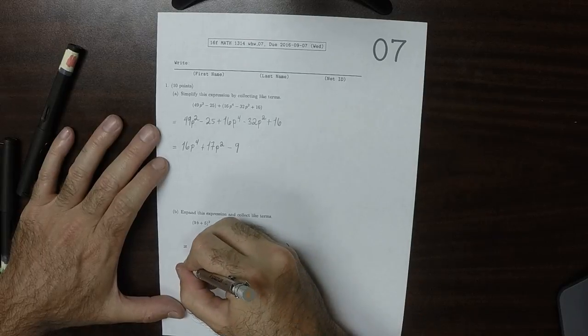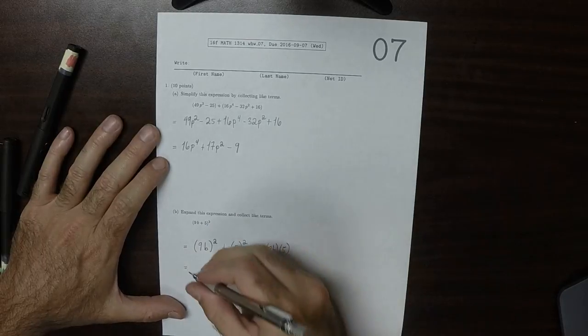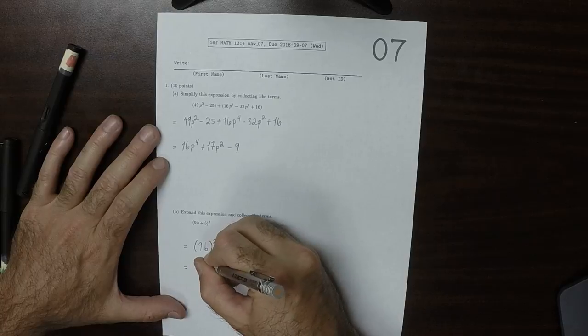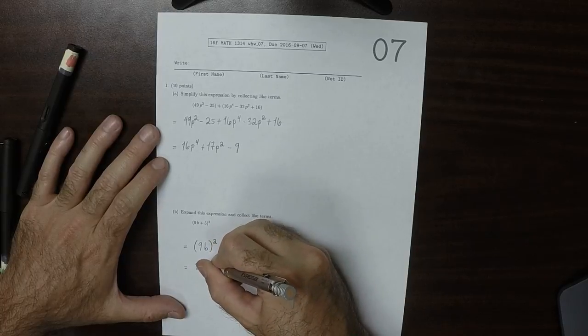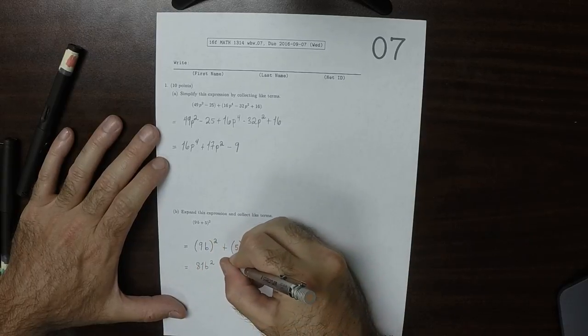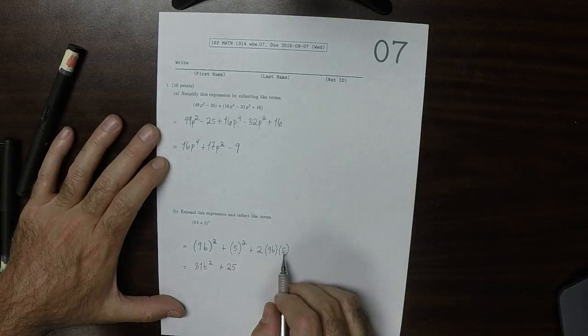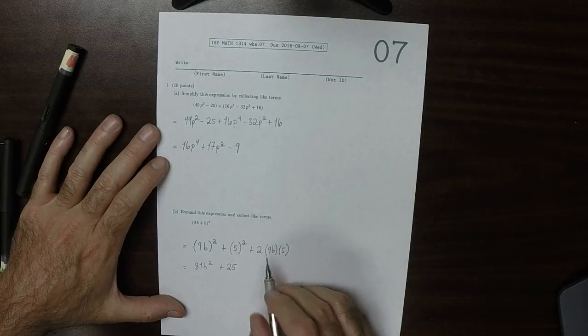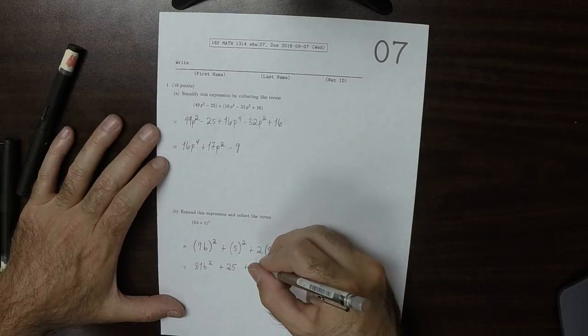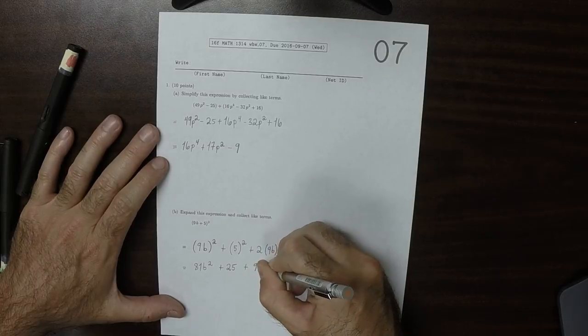So then carrying that out, that's 81p squared plus 25. 2 times 5 is 10 times 9 is 90. So plus 90b.